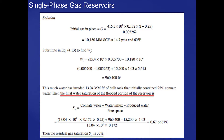The final water saturation of the flooded portion of the reservoir is given by an expression where we look at the connate water, the water influx minus the water produced, divided by the pore space — that gives us S sub W. We calculate a water saturation of 67 percent, so the residual gas saturation at this pressure would be 33 percent.